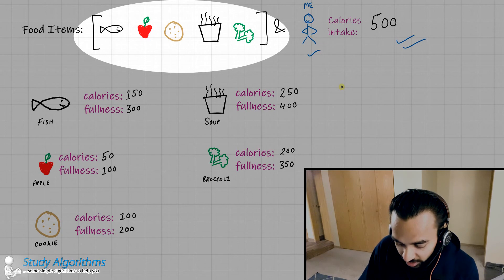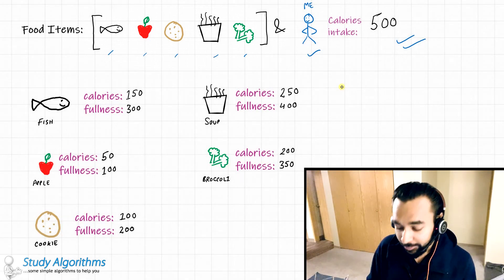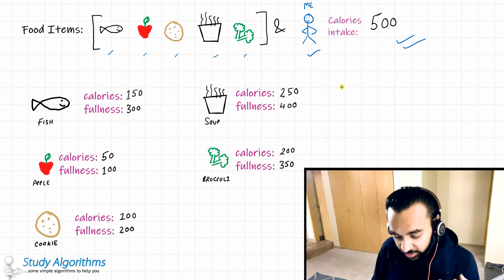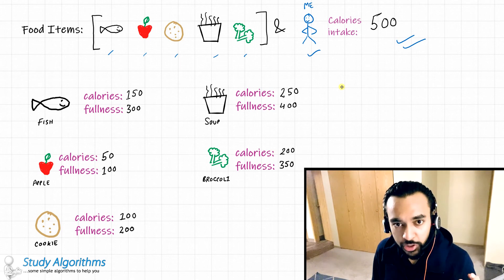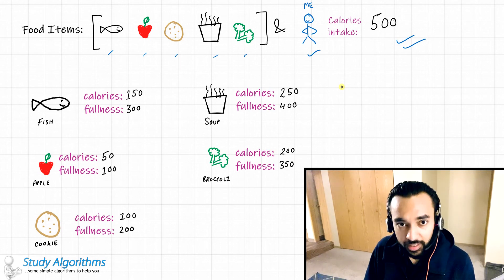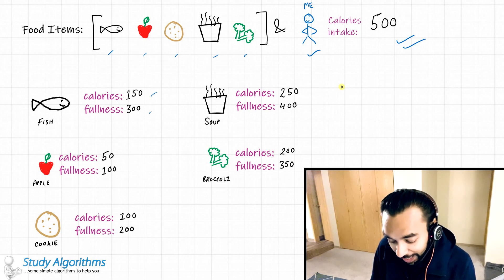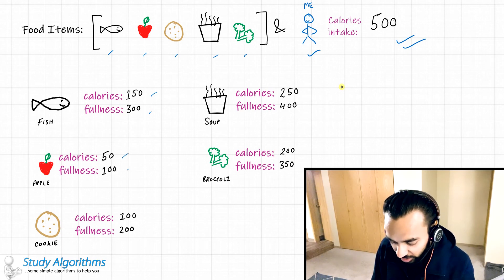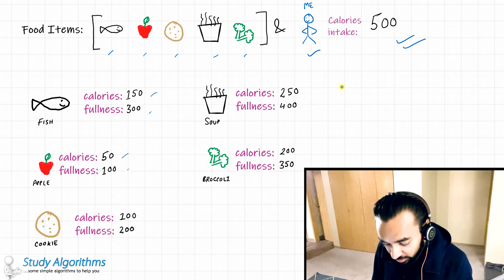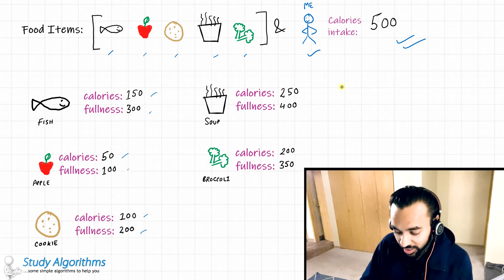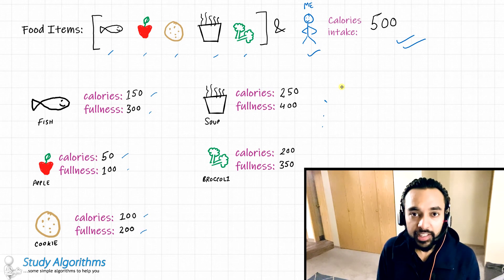You have a couple of food items to choose from: a fish, an apple, a cookie, a bowl of soup, and some broccoli. All of these food items have certain values associated with them. A fish gives you 150 calories and its fullness strength is 300. An apple is just 50 calories and its fullness strength is 100. A cookie gives you 100 calories and its fullness strength is 200, and so on.